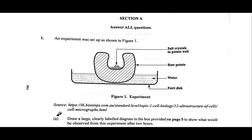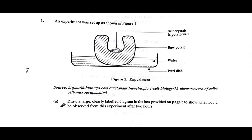Let's begin with the Section 8 questions. Question 1 says an experiment was set up as shown in Figure 1. We have a petri dish with some water, a raw potato with a well cut out in the middle, and some salt crystals placed in this potato well. It says to draw a large, clearly labeled diagram in the box provided on page 5 to show what would be observed from this experiment after two hours.